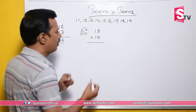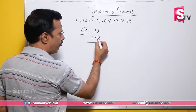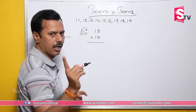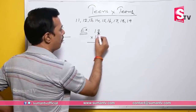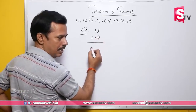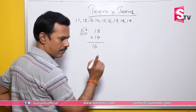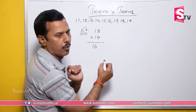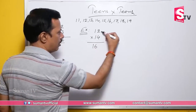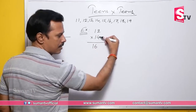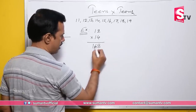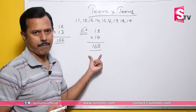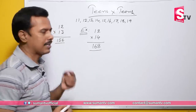Next example: 12 into 14. Now, 12 plus 4 equals 16. Or alternatively, 14 plus 2 also equals 16 — the value is the same either way. Then on the right side, unit digits: 2 × 4 = 8. So 12 into 14 is 168.